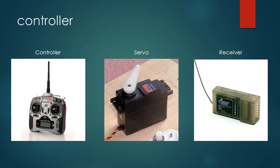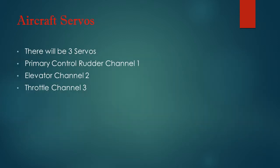As for the controller, these are our three main important parts to control our aircraft: the controller, the servo, and the receiver. As for aircraft servos, there will be three servos in the aircraft. Firstly is the primary controller rudder on channel 1, second is the elevator on channel 2, and the third is the throttle channel which is channel 3.